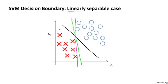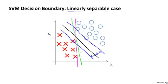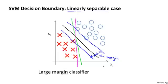Mathematically, what that does is this black decision boundary has a larger distance — that distance is called the margin. If I draw these two extra blue lines, we see that the black decision boundary has a larger minimum distance from any of my training examples, whereas the magenta and green lines come awfully close to the training examples. This distance is called the margin of the support vector machine, and this gives the SVM a certain robustness because it tries to separate the data with as large a margin as possible. So the support vector machine is sometimes also called a large margin classifier.